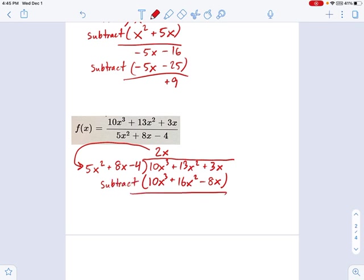Well, 10x cubed minus 10x cubed is nothing. 13x squared minus 16x squared is negative 3x squared. And then it looks like I've got minus negative 8. That's going to be positive 11x here.